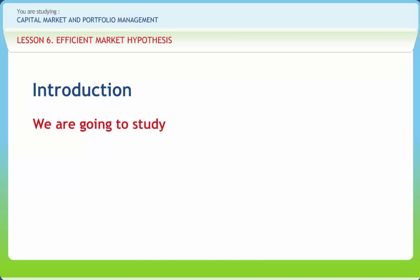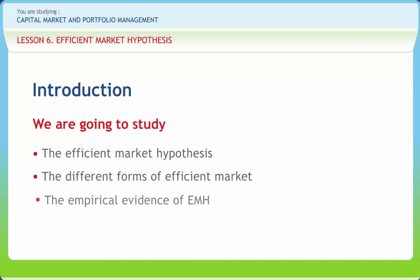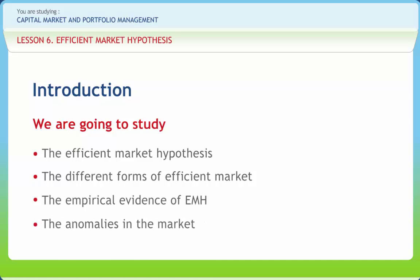In this lesson, we will discuss the efficient market hypothesis, describe the different forms of efficient market, explain the empirical evidence of EMH, and describe the anomalies in the market.